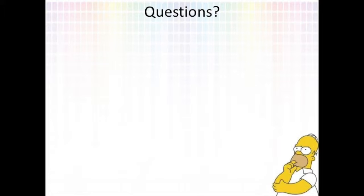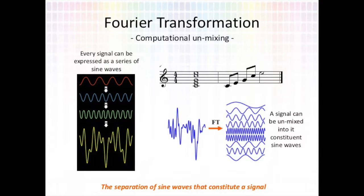Although this was a pre-recorded presentation, I did prepare some example question slides in anticipation of questions in a live presentation setting. Firstly, Fourier transformation is the computational unmixing of a signal. A good way to think about it is: imagine we have a musical chord and we're able to determine the volume of each note inside that chord just from hearing that chord — that's kind of how Fourier transformation works. Basically, every signal is made up of a series of sine waves, so we are able to computationally unmix that signal into its constituent sine waves.